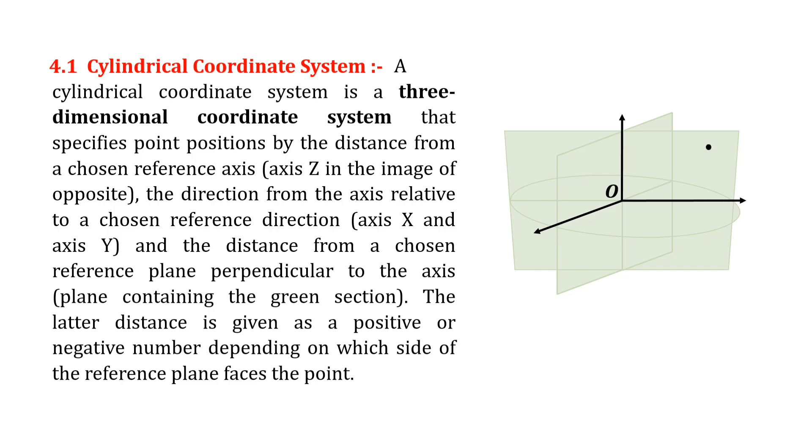A cylindrical coordinate system is a three-dimensional coordinate system that specifies point positions by the distance from a chosen reference axis (axis Z in the image opposite), and the direction from the axis relative to two chosen reference directions (axis X and axis Y).